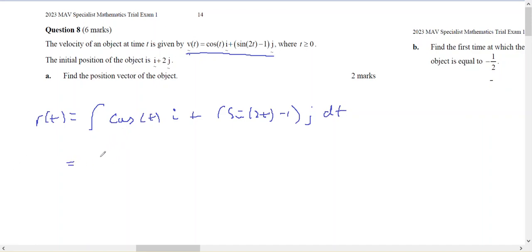The integral of cos is going to give you sin(t) in the i plus the integral of sine will be -1/2 cos(2t), but it will be negative, minus t in the j, plus some constant c.